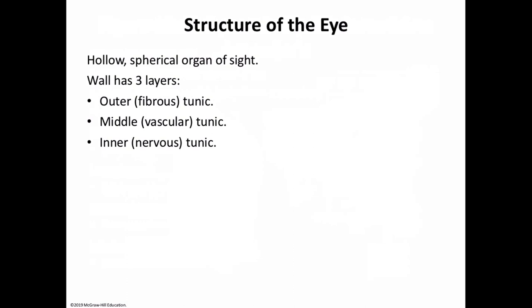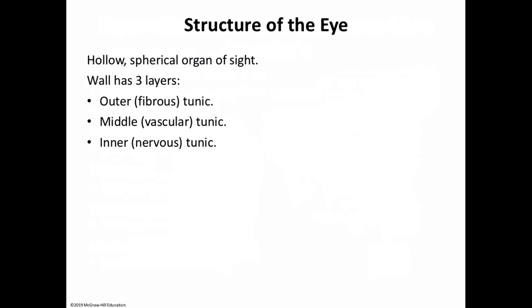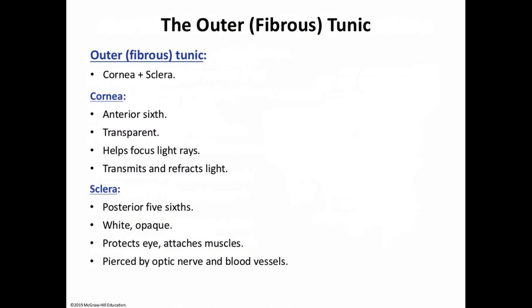Now I'll get to the structure of the eye. The eyeball has three tunics: the fibrous or outer tunic, the vascular or middle tunic, and the inner nervous tunic. The outer fibrous tunic is composed of dense avascular connective tissue and has two parts: the sclera and the cornea.